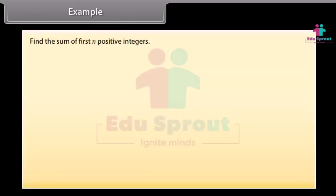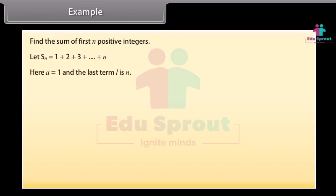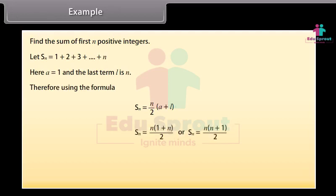Find the sum of first N positive integers. Let SN equal to 1 plus 2 plus 3 plus so on plus N. We can see that here A is equal to 1 and the last term L is N. Therefore, using the formula SN equal to N upon 2 into (A plus L), we get SN equal to N into (1 plus N) whole upon 2, or SN is equal to N into (N plus 1) whole upon 2. So the sum of first N positive integers is SN equal to N(N plus 1) upon 2.